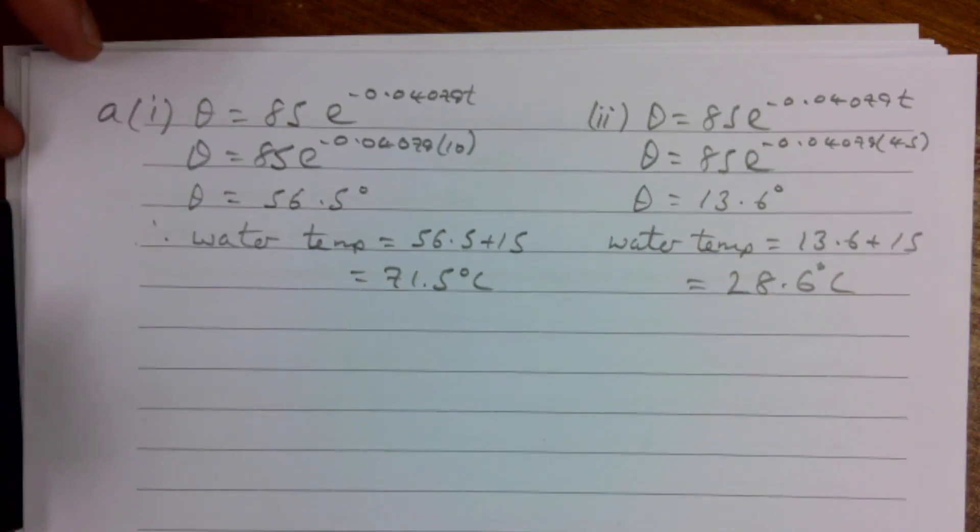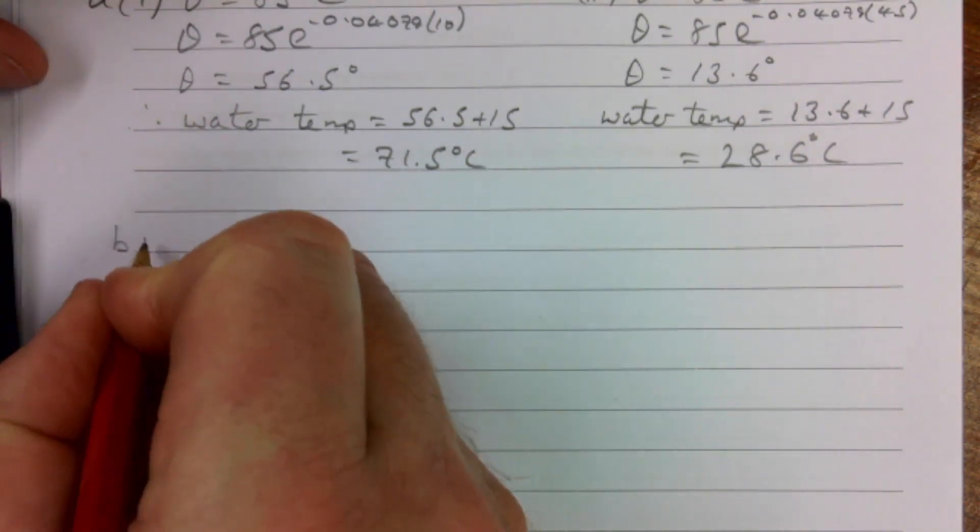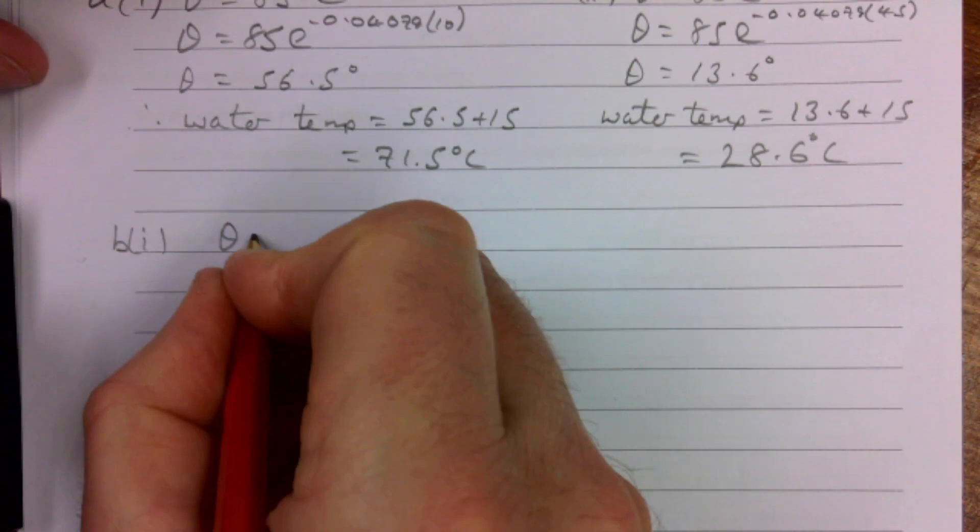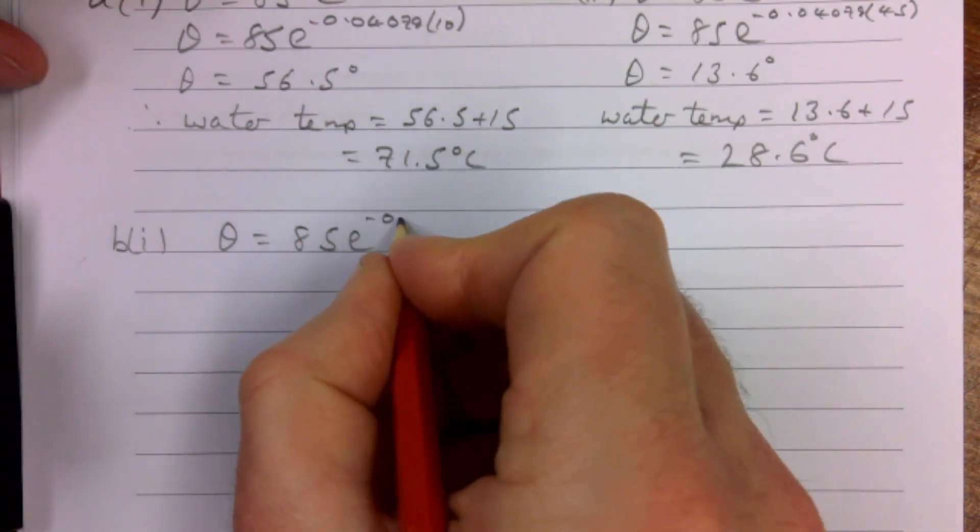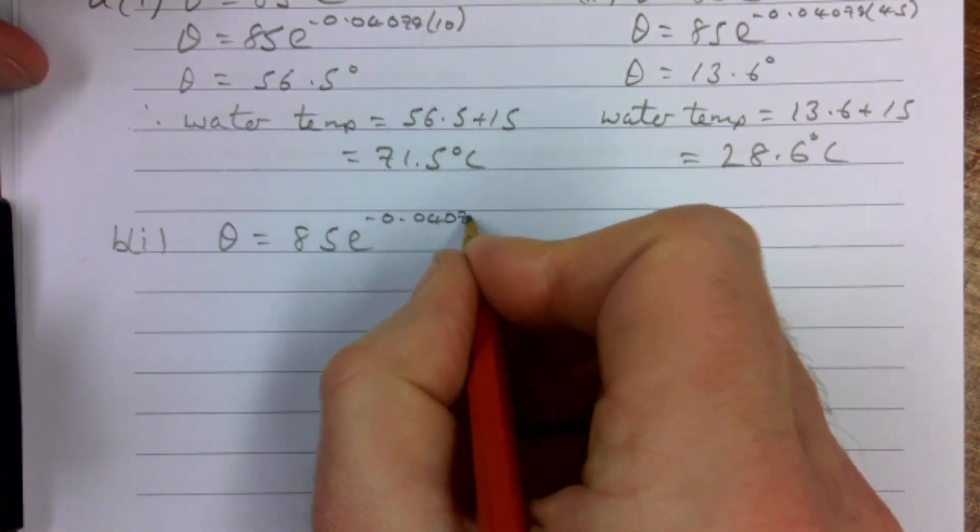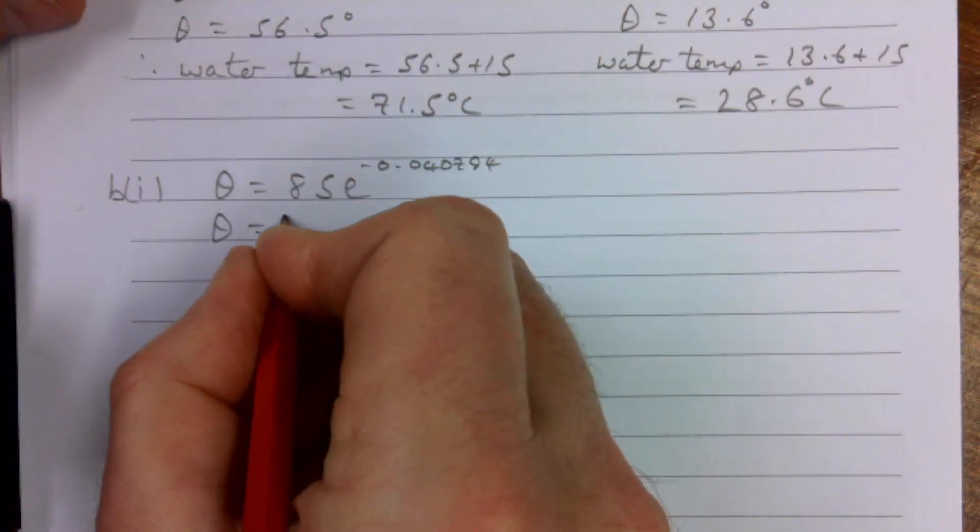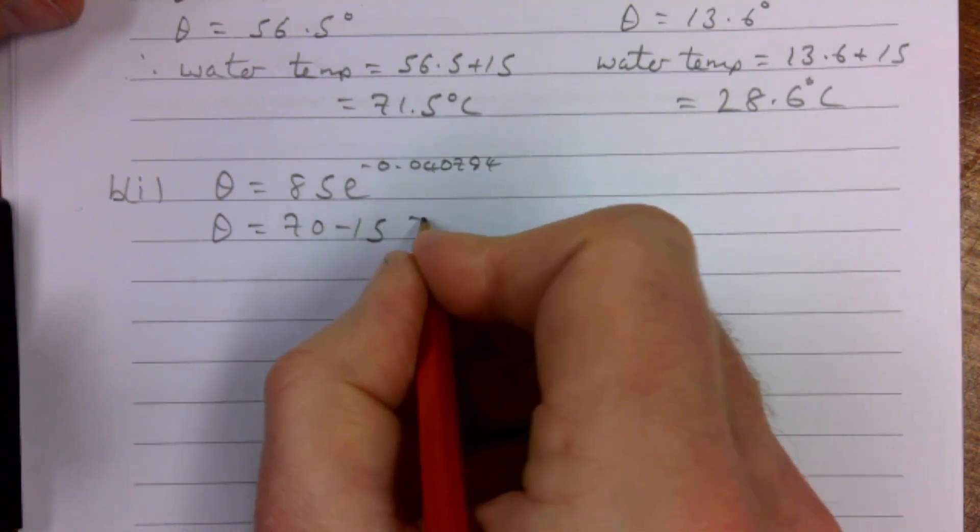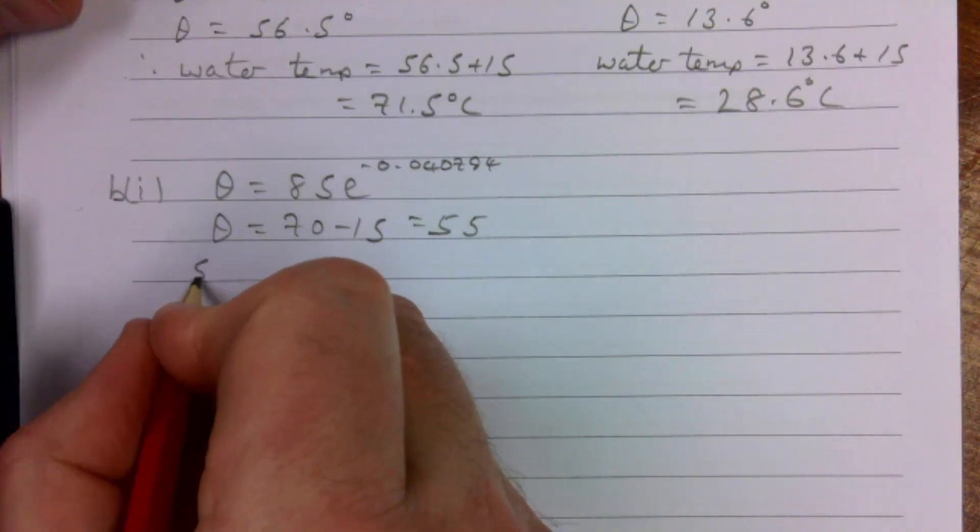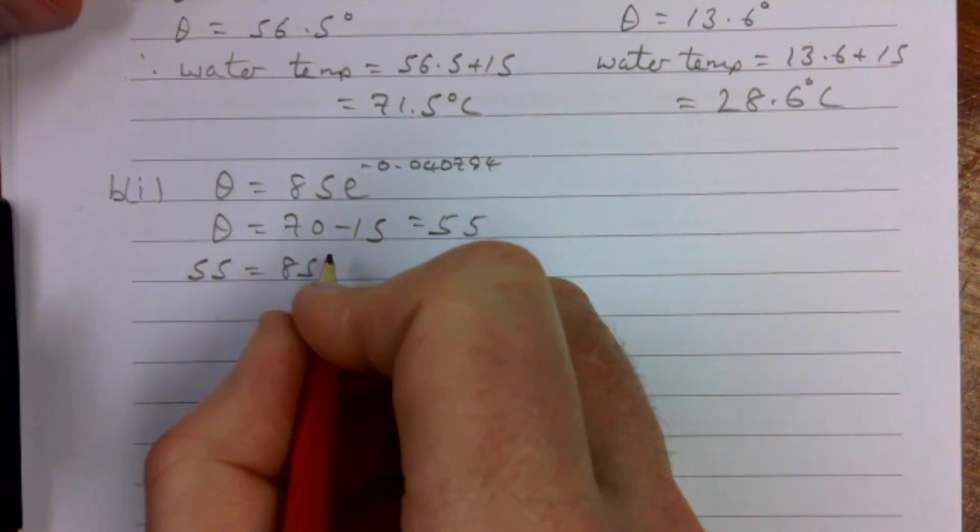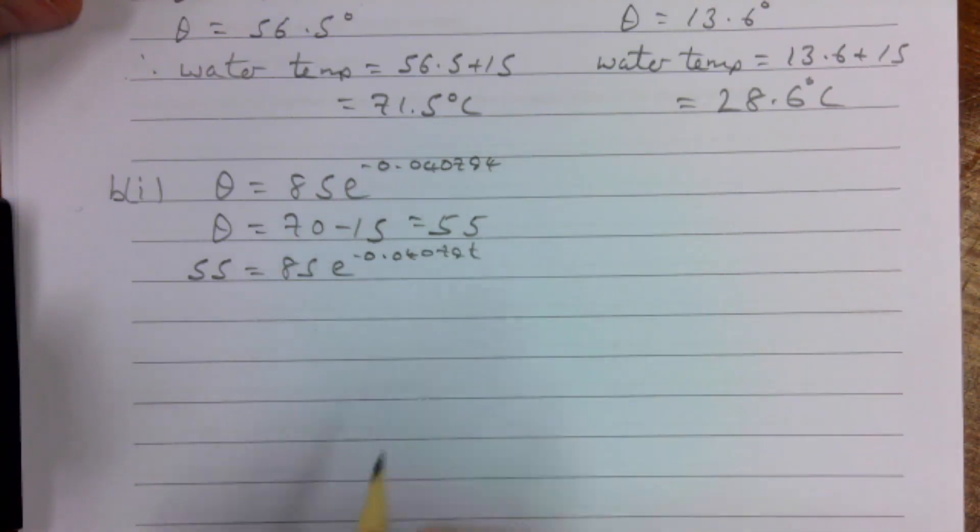Part B we're going to use the formula the other way around, so that's going to involve a bit of logs. B part 1, of course we know θ = 85e^(-0.040794t). Our θ in this case is going to be 70 - 15, which is 55. Remember we're doing our excess temperature here. So 55 = 85e^(-0.040790t).